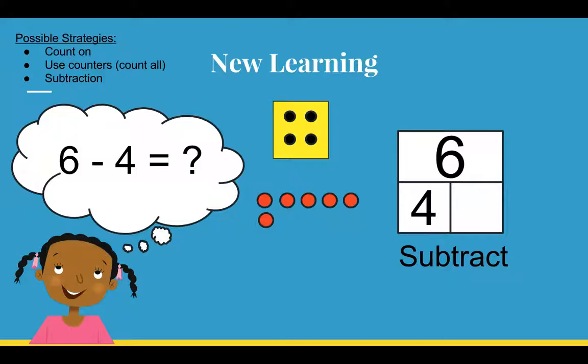so I'm going to use counters to help myself. I have my 6 counters out right here, and I can flip over counters or cross them off to take away the 4 that is the part that I know.